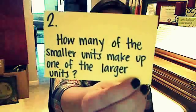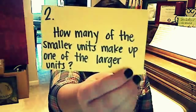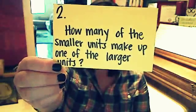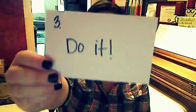All right, so let's go over the remaining steps before we try problems. The second step, after we figure out if we need to multiply or divide, is figuring out how many of the smaller units make up one of the larger units. For example, going from feet to inches: how many inches make up one foot? There are 12 inches in one foot. That's step two. Step three is the easiest step — just do it. Solve the problem.